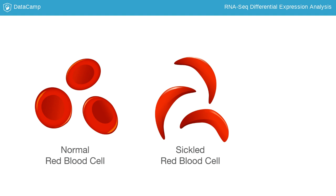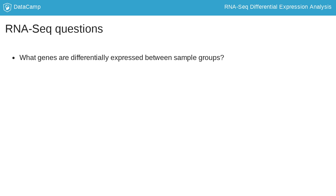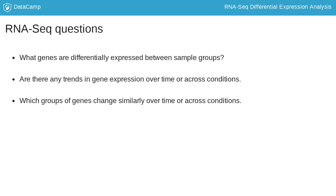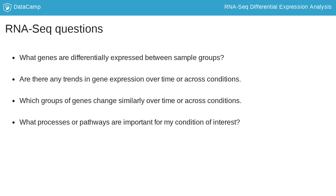To explore the gene expression changes that occur in disease or between different conditions, it can be useful to measure the quantity of RNA expressed by all genes using RNA-seq. Then, differential expression analysis of RNA-seq data can be used to determine whether there are significant differences in gene expression between conditions. Using differential expression analyses, we can ask various questions, including which genes are differentially expressed between sample groups, are there any trends in gene expression over time or across conditions, which groups of genes change similarly over time or across conditions, and what processes or pathways are enriched for my condition of interest.